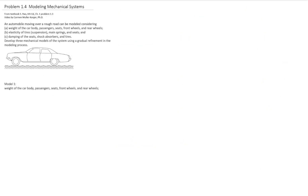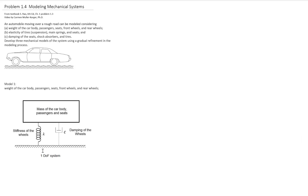The simplest model we can consider is a one-degree-of-freedom system, where we consider the weight of the car, the passenger, the seat, and the front wheel all together. We have a single degree of freedom system: the mass of all the system, the stiffness, and the damping of the wheels.